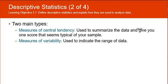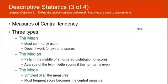The three measures of central tendency that are used are the mean, median, and mode. The mean is the most commonly used and it's the average. The fallback on it is that it doesn't work for extreme scores. The median is the one that falls in the middle of an ordered distribution of scores, and the average of the two middle scores if the number is even. And the mode is the most frequent score.